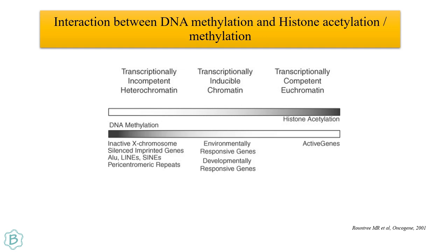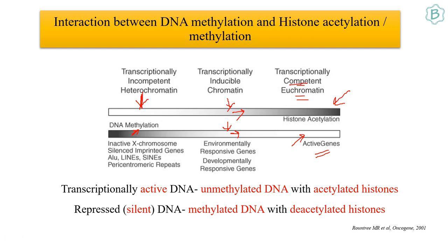High histone acetylation and very low DNA methylation characterizes competent euchromatin, seen in active genes. When the levels are intermediate — histone acetylation or DNA methylation can be inducible or removable — it is called transcriptionally inducible chromatin. Remember: transcriptionally inactive DNA has unmethylated DNA with acetylated histones, and repressed DNA has methylated DNA with deacetylated histones.